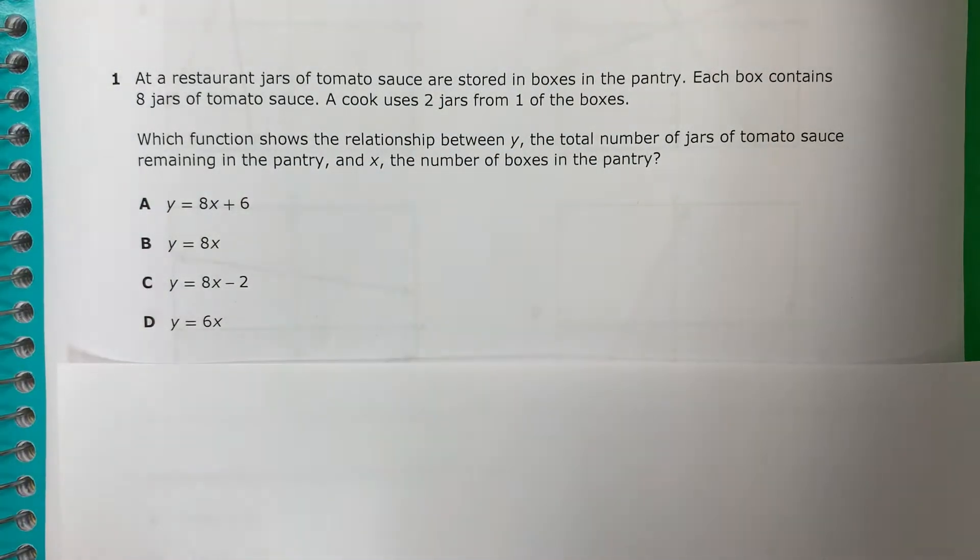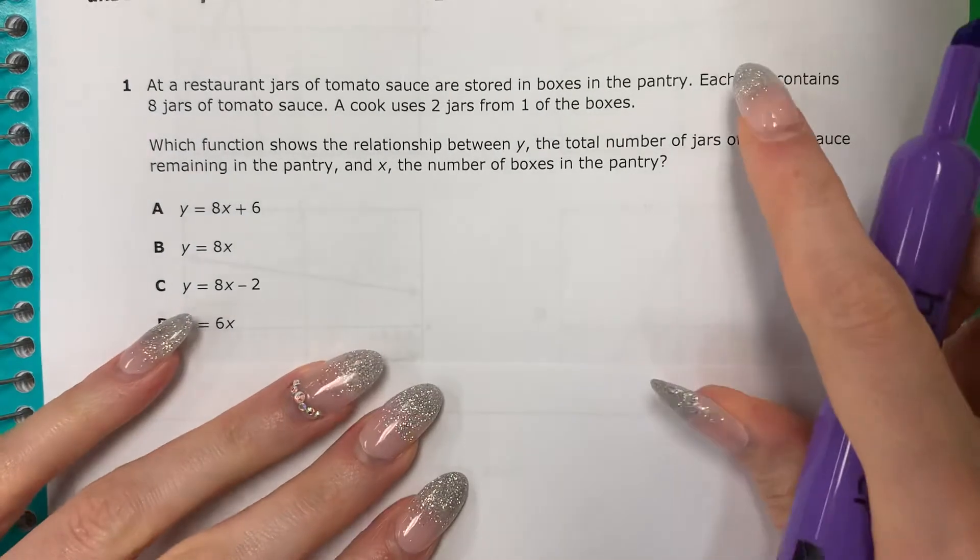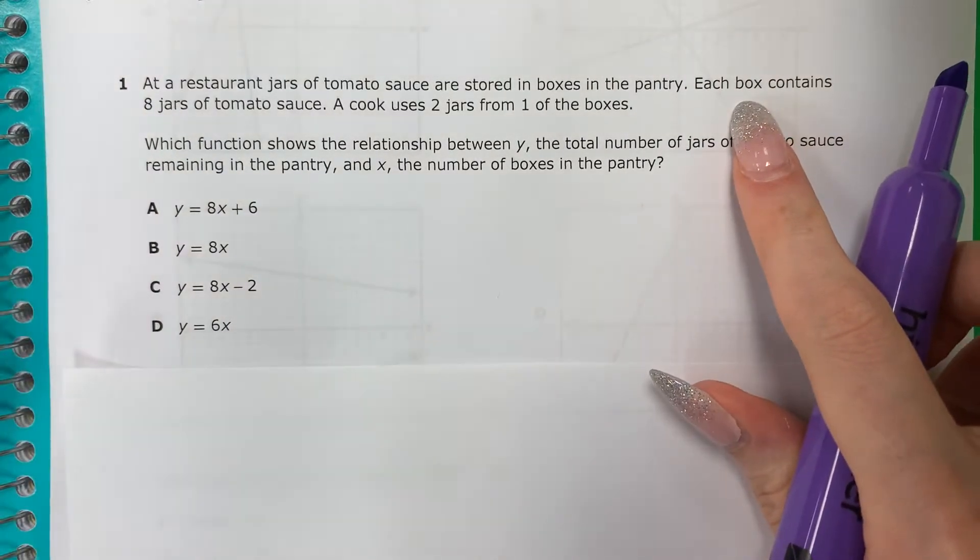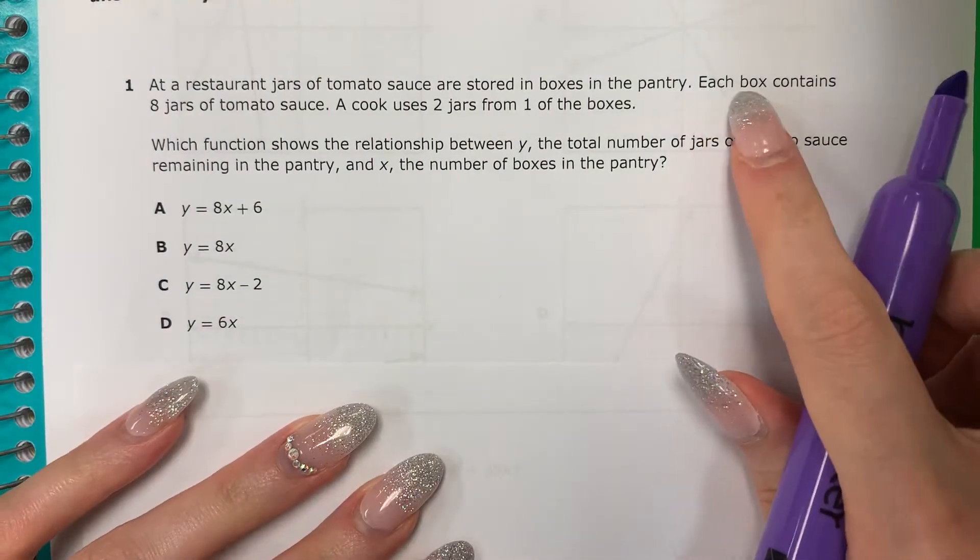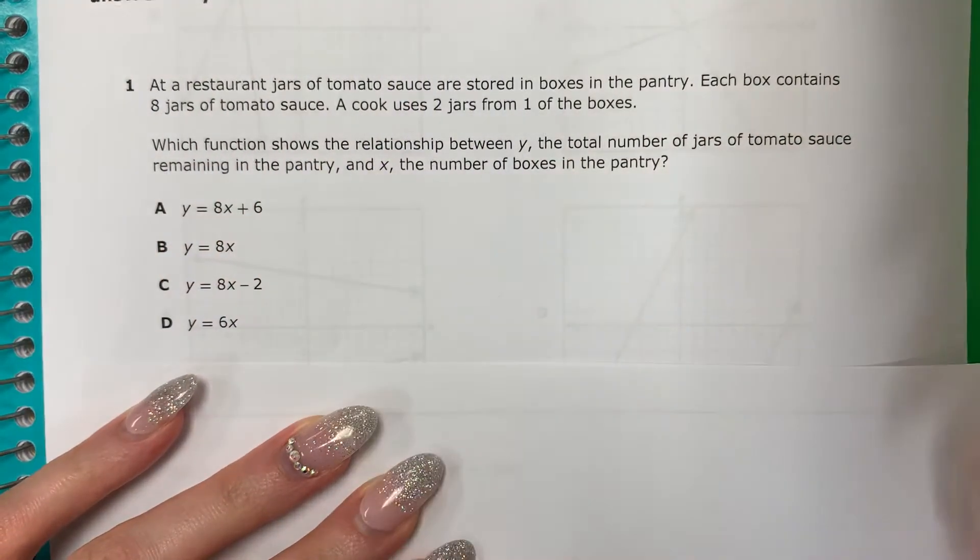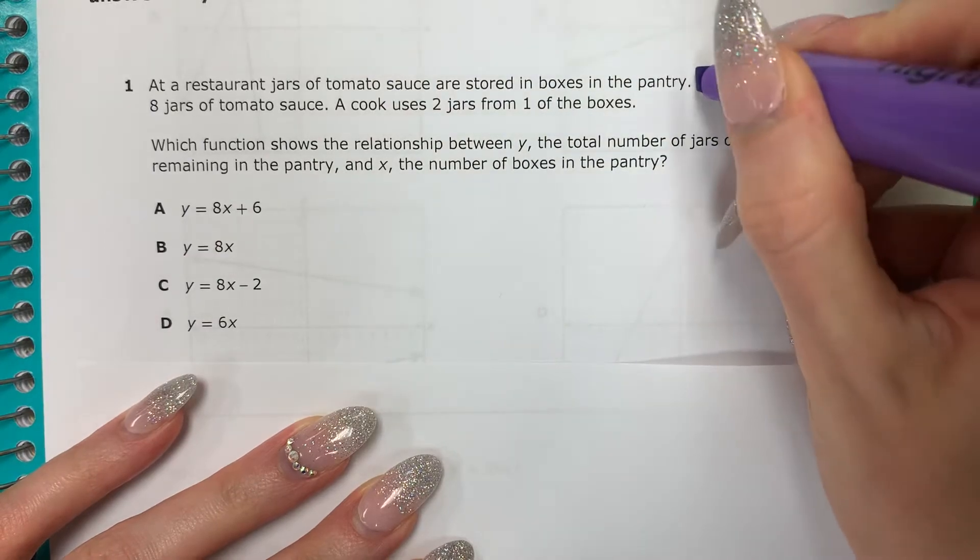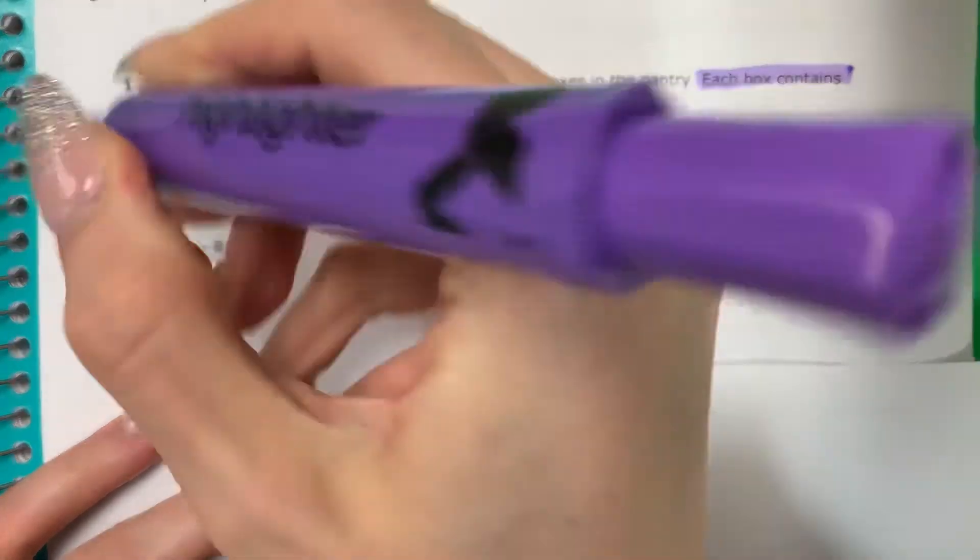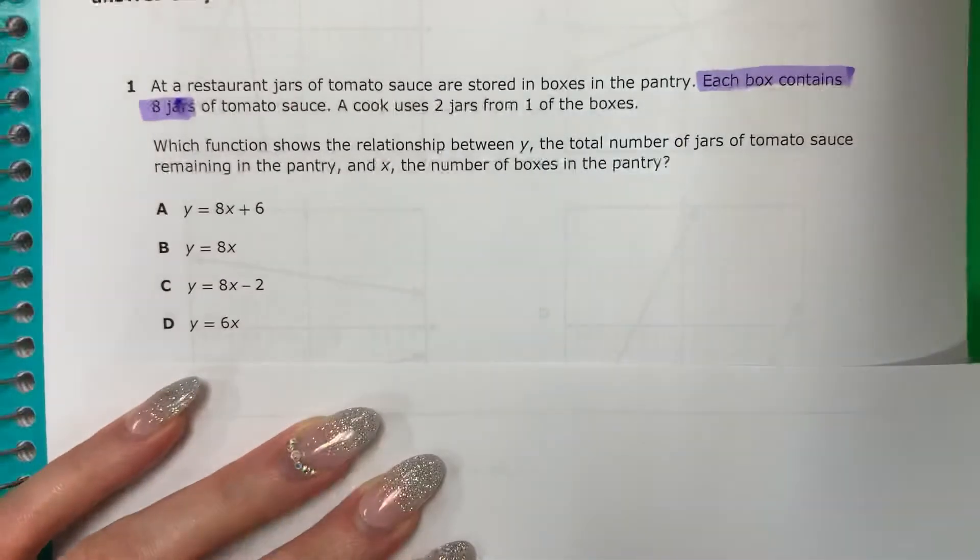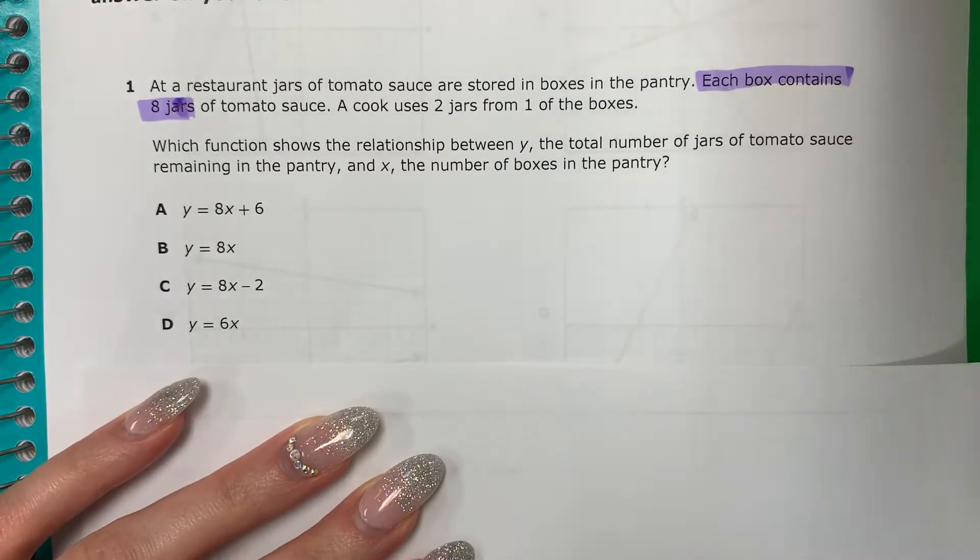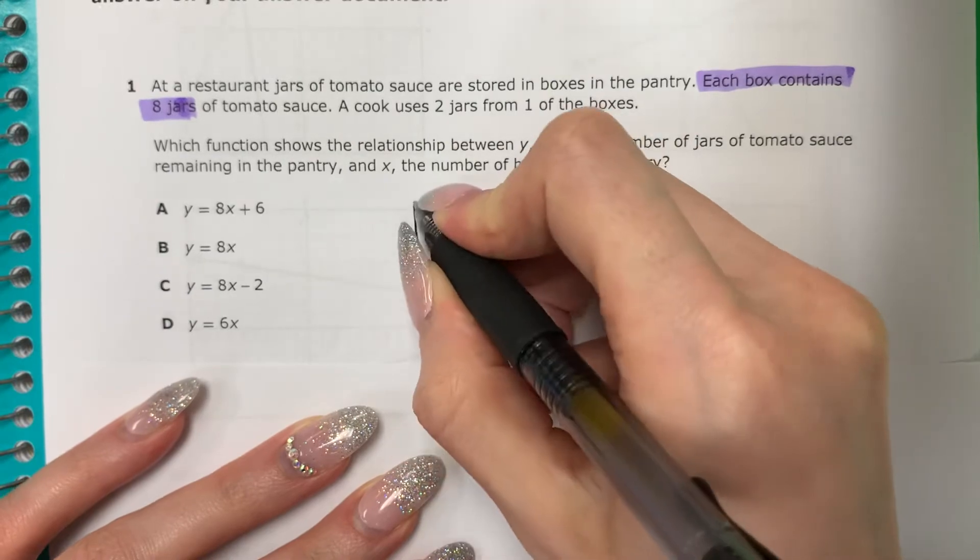So let's see what's important. Vamos a ver qué es importante. I have boxes and jars. Tengo cajas y frascos. Each box contains 8 jars of tomato sauce. Cada caja tiene 8 frascos. So I'm going to draw a picture. Voy a dibujar algo. Here's a box. Aquí hay una caja.